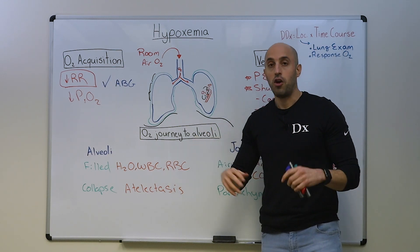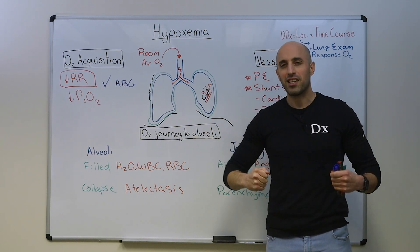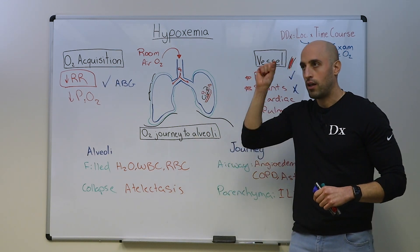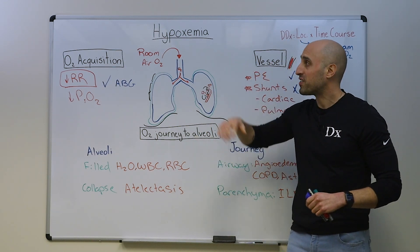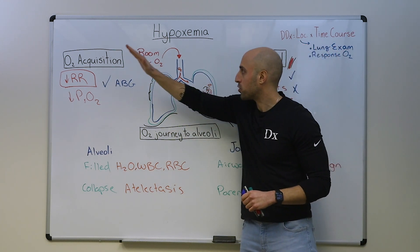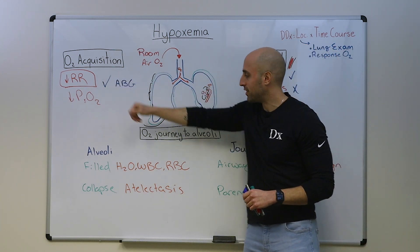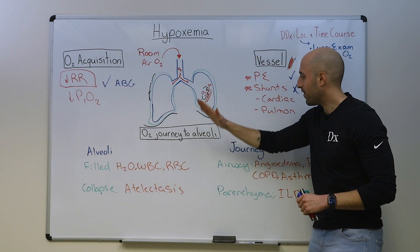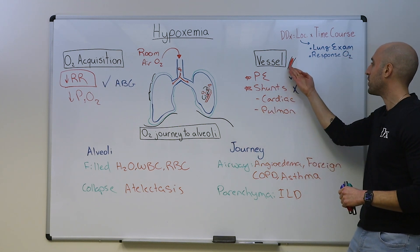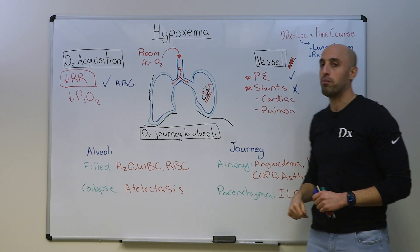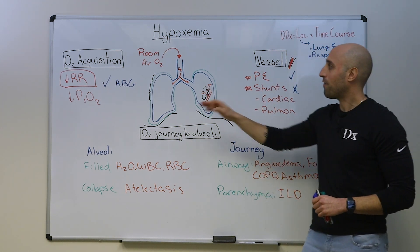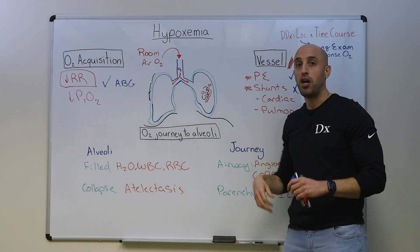To summarize, a practical approach to hypoxemia involves thinking about the normal journey of oxygen, which starts with oxygen acquisition, then the oxygen's journey to the alveoli, and then diffusion into the bloodstream. A lesion at any of these sites can lead to hypoxemia.